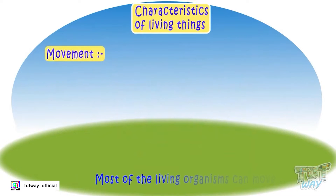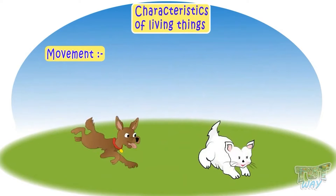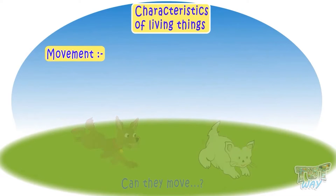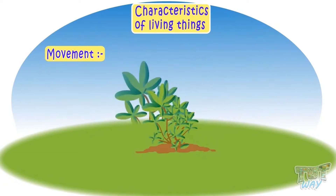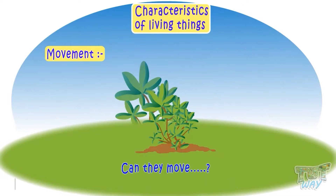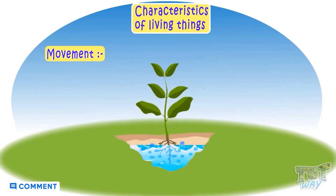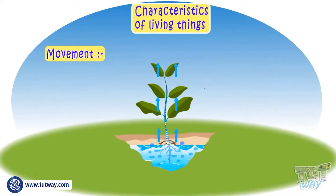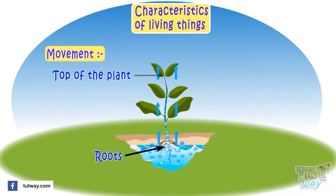Most living organisms can move — like we can walk, run, and go anywhere. Our pets are living things and they can move too. Plants are living organisms, but they can't move from one place to another. However, they can move water inside them — they take in water from their roots and move that water from the roots to the top of the tree, to each and every leaf.